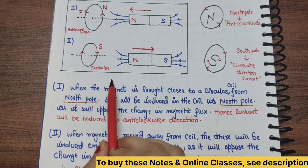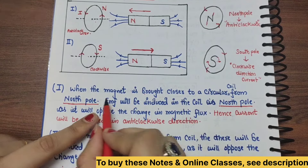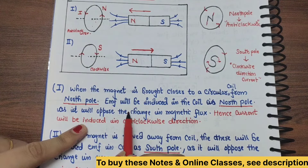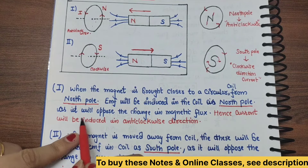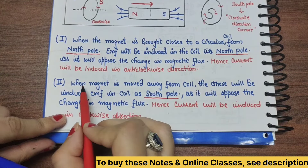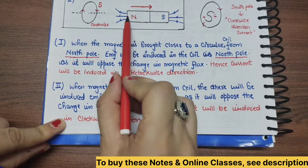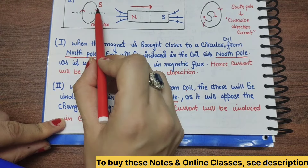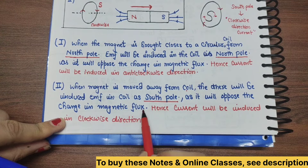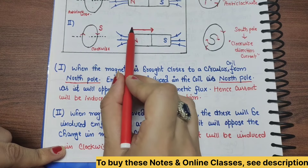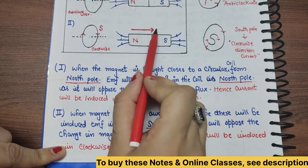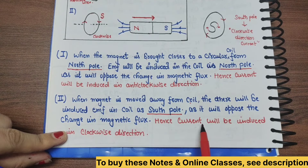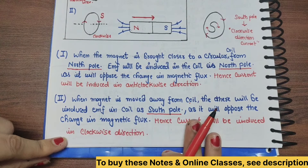So first, we have written the same thing: when the magnet is brought closer to the circular coil from the north pole, EMF will be induced in the coil such that the coil acts as a north pole — opposing the change in magnetic flux — hence current is induced in the anticlockwise direction. And when the magnet is moved away from the coil, the induced EMF acts as a south pole, opposing the flux change, and hence current is induced in the clockwise direction.